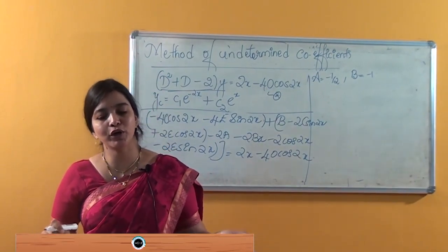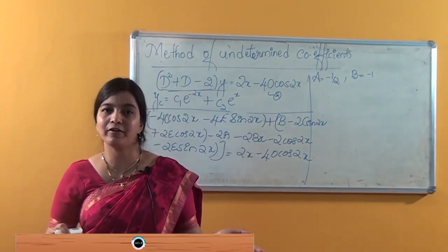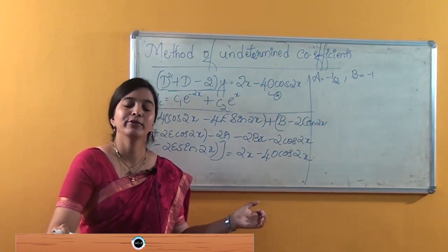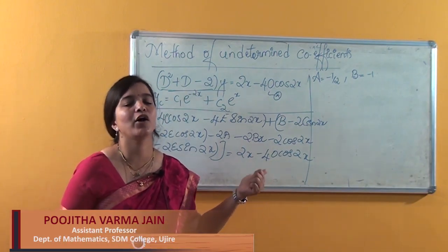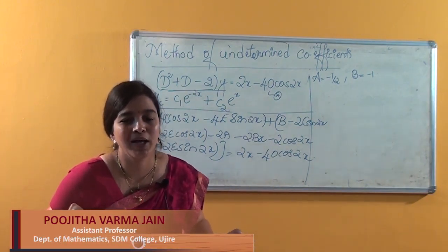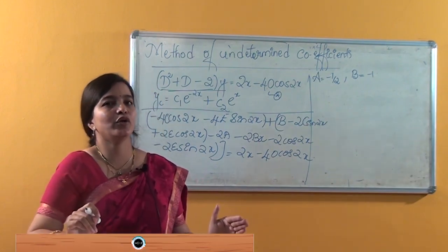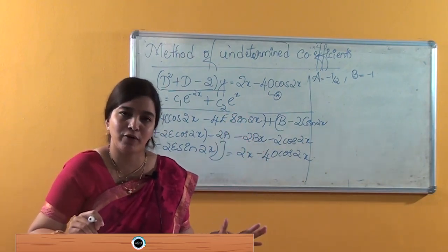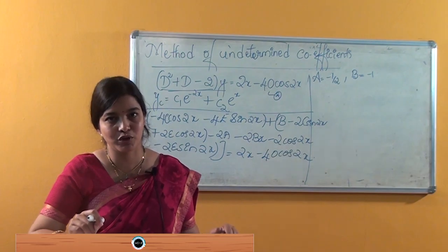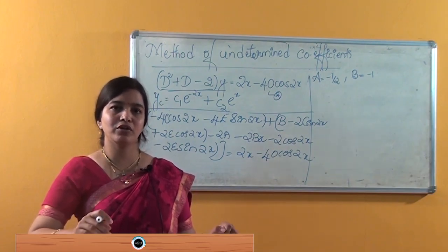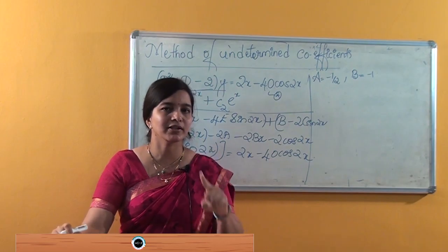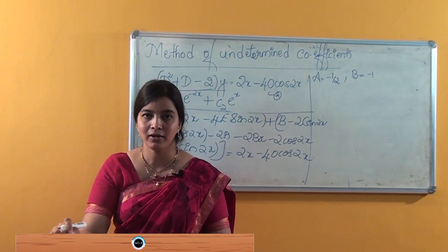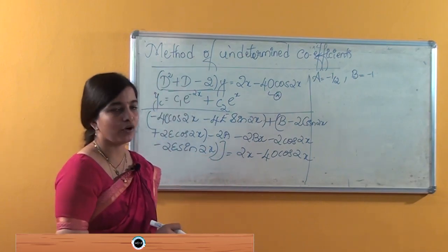Welcome to the session. Today we are going to take the session on Paper Phi, that is nothing but our linear differential equation. Here we were discussing in our previous class about finding the solution for the non-homogeneous equation. We had to find the particular solution — the complementary solution we have already found out. We were discussing one method, that is finding the solution using undetermined coefficients.